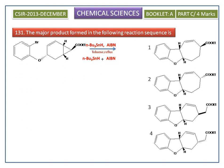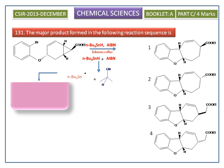Tertiary butyl tin hydride reacts with AIBN to give a tertiary butyl tin radical. This radical abstracts bromine from the starting material, generating a new carbon radical.